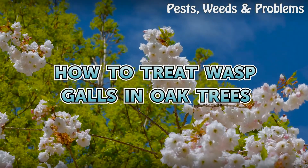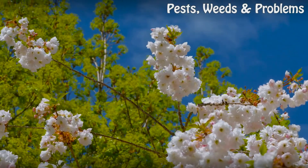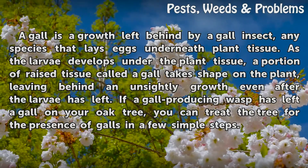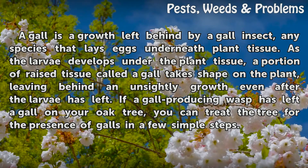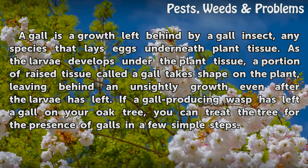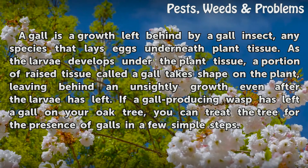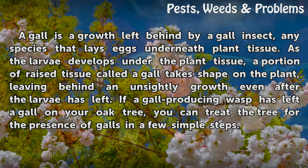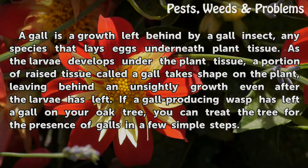How to treat wasp galls in oak trees. A gall is a growth left behind by a gall insect, any species that lays eggs underneath plant tissue. As the larvae develops under the plant tissue, a portion of raised tissue called a gall takes shape on the plant, leaving behind an unsightly growth even after the larvae has left.